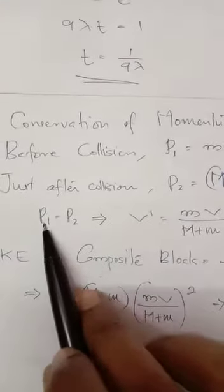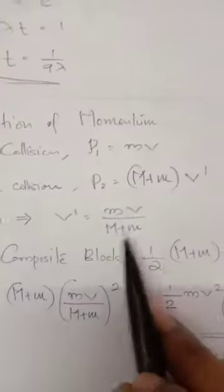P1 equals P2, initial and final momentum. So v dash I will get as mv divided by m plus M.